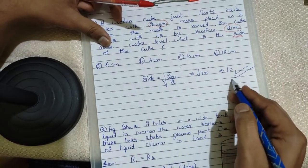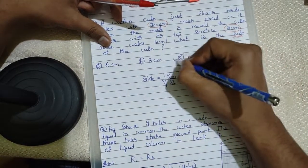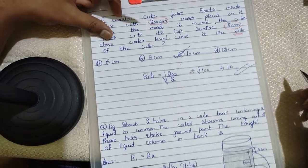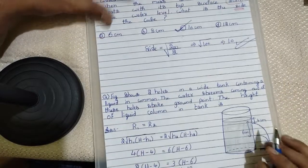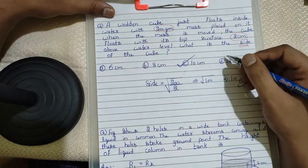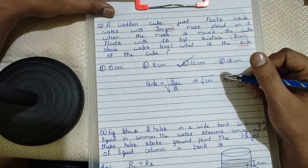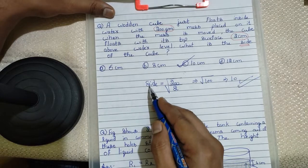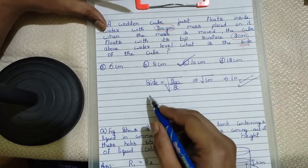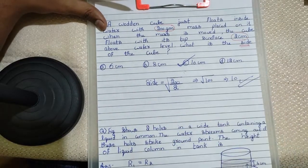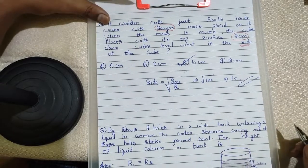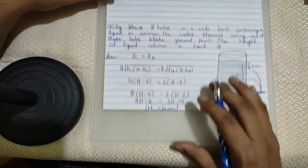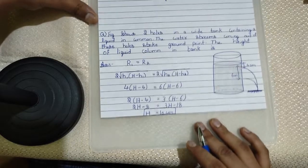In just one line, you got the answer. So simple. If you go on solving this question with the regular method, you will take two to three minutes. With this amazing magical trick, we just got the answer in one line. In just less than 10 seconds, you can answer this type of questions. Now, let's come to the final last question.